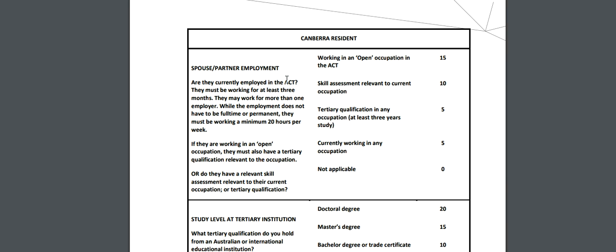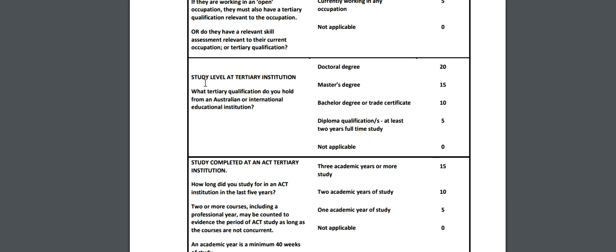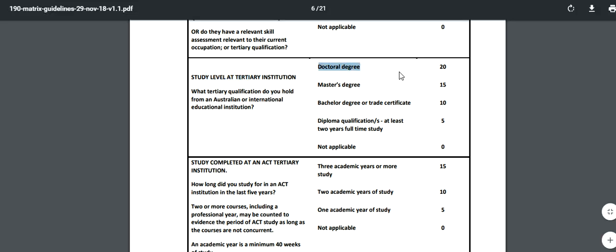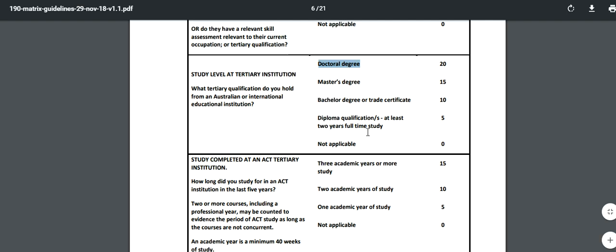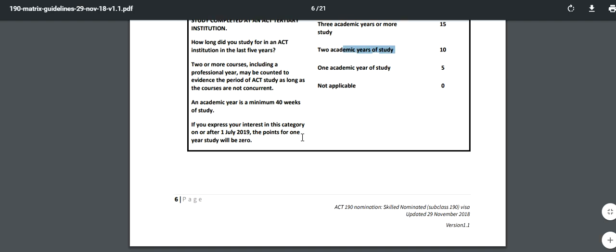Spouse or partner employment: if they are currently employed in ACT for at least 3 months, working a minimum of 20 hours per week, they may work for more than one employer - the employment doesn't have to be full-time or permanent. For study level at a tertiary institution: doctoral gives 20 points, master's gives 15, bachelor gives 10. For study completed at an ACT tertiary institution: 3 academic years or more gives 15 points, 2 academic years gives 10 points, 1 year gives 5 points.